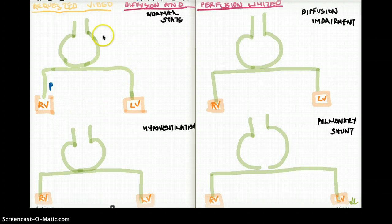So let's orient ourselves with the pictures. This is our pulmonary artery. This would be our pulmonary vein. So naturally this is our right ventricle, this is our left ventricle, and this is our alveolus.